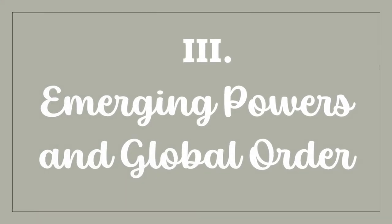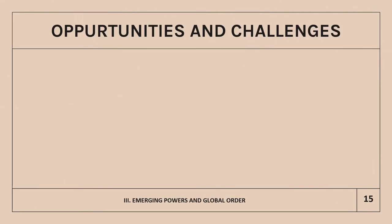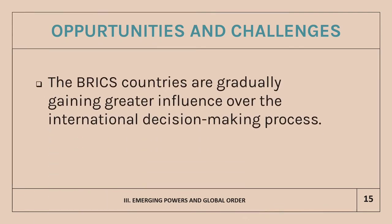Now let's head to the third and last main content of this topic, which is about emerging powers and global orders, and the opportunities and challenges that arise. The BRICS countries — Brazil, Russia, India, China, and South Africa — are gradually gaining greater influence over the international decision-making process. Given their expanding economic size and increasingly active diplomacy, managing the influence of these emerging powers and reforming global institutions has become a decisive issue for establishing an effective global governance system.